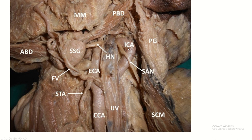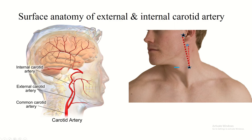This is the internal jugular vein. This is the common carotid artery. This is the internal carotid artery, and this is the external carotid artery. So that is the summary of the external and internal carotid artery.